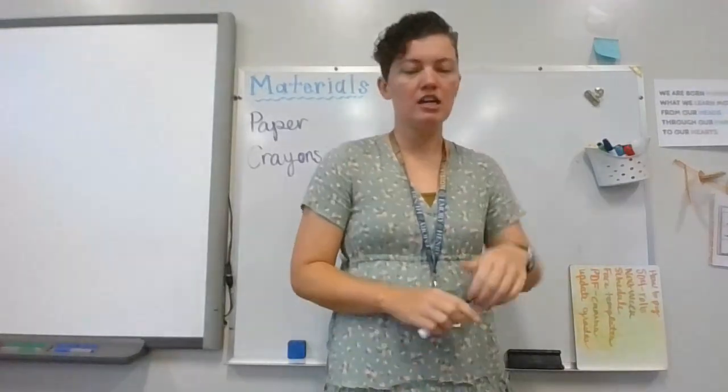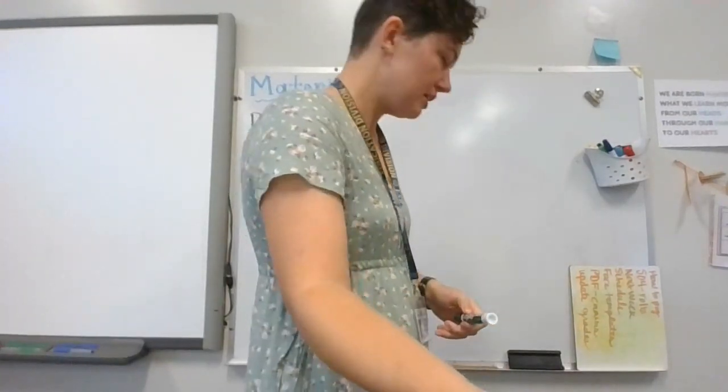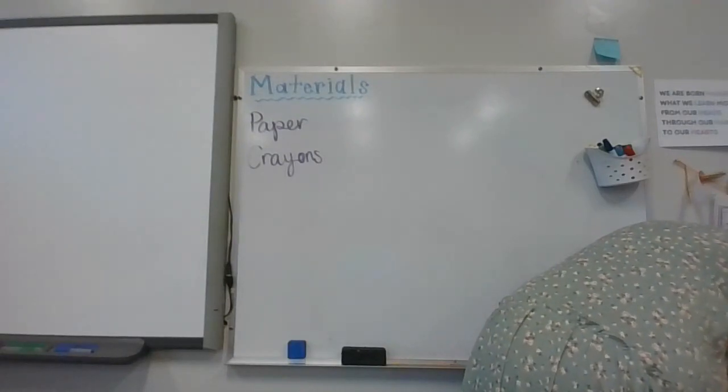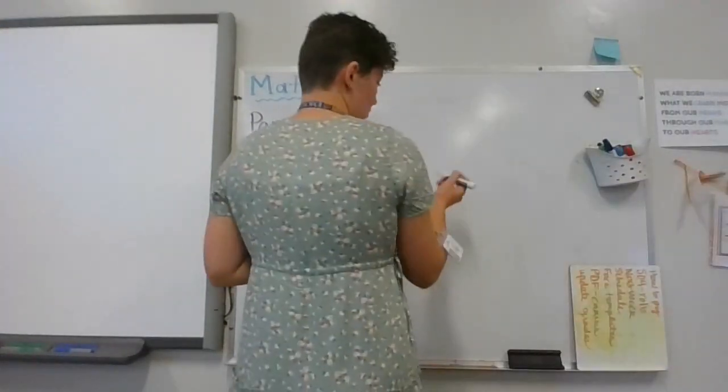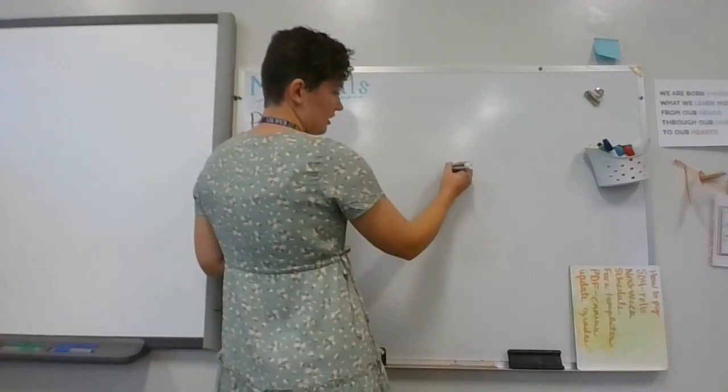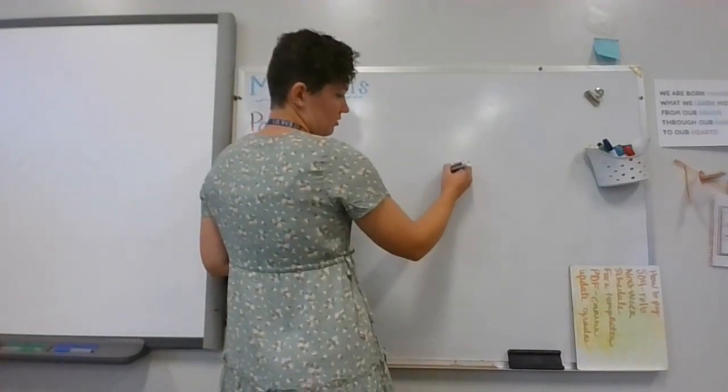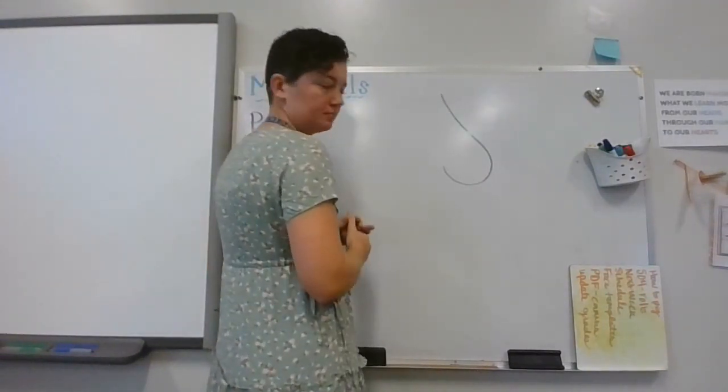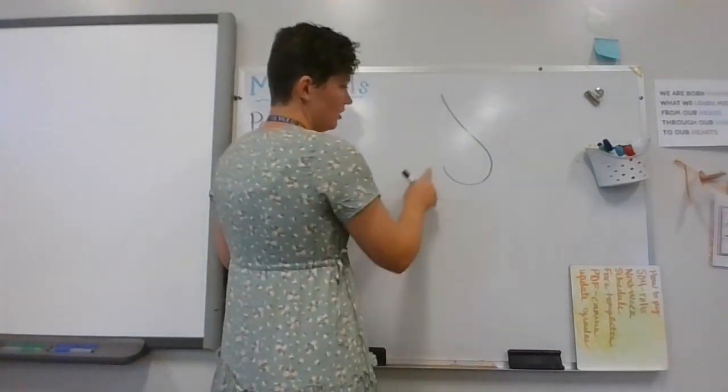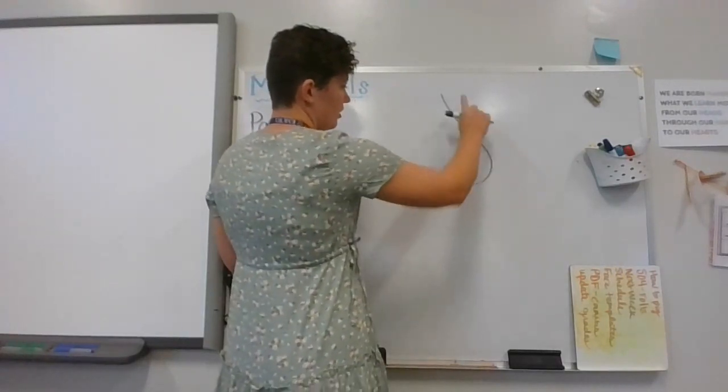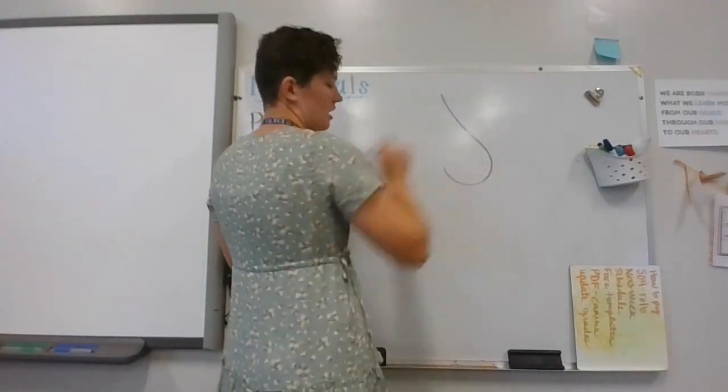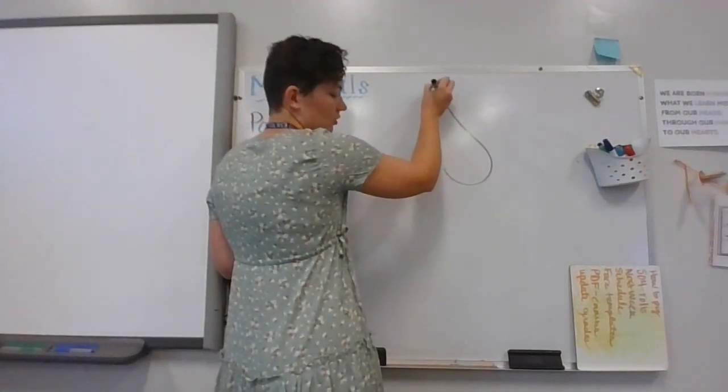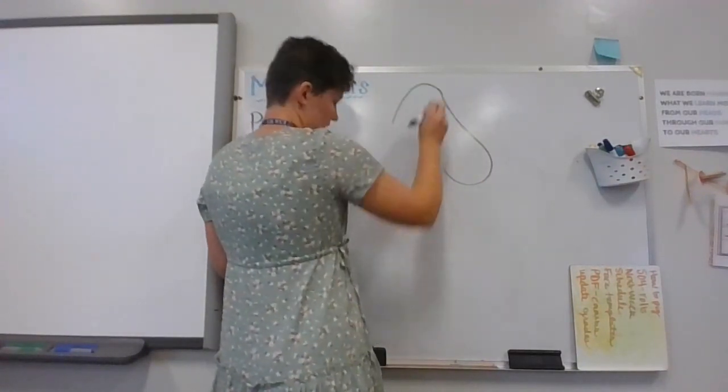What you're going to do to start is begin with its chin. We're going to curve up and around—almost like an S without putting the top on it. You're going to take your line and curve up and down.